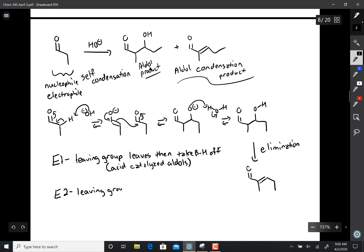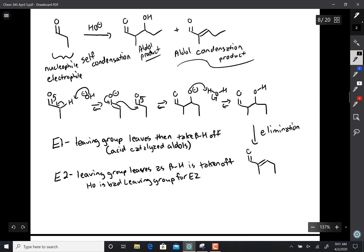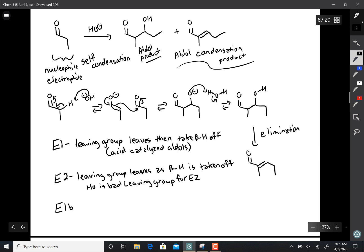We also talked about the E2 reaction in Chem 343. Well, it's a simultaneous event. The leaving group leaves as the beta hydrogen is taken off. But this is not the mechanism, because OH is a bad leaving group for E2.